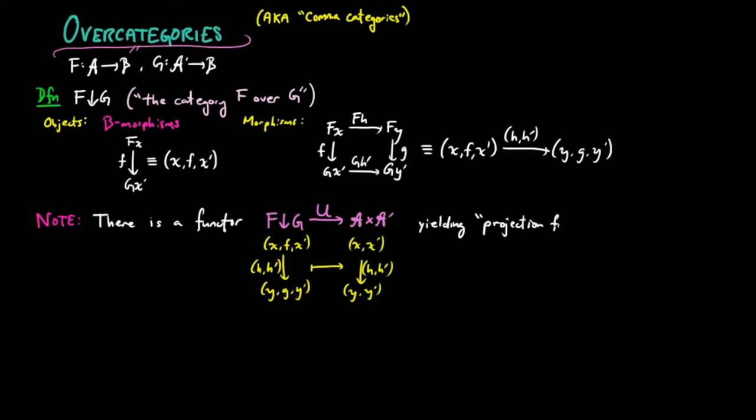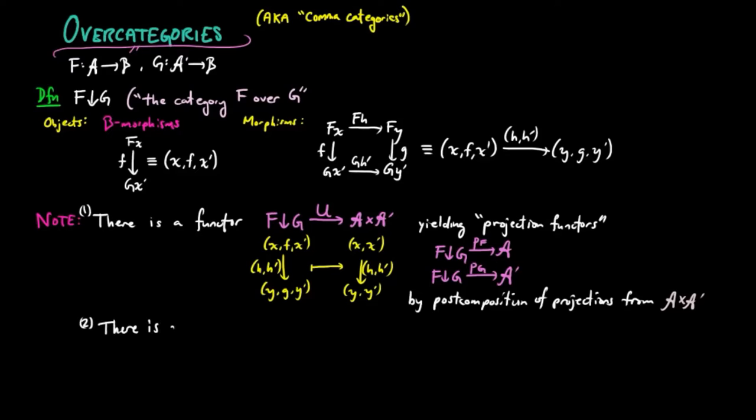And then this functor yields projection functors p lower script f from f over g to a, and p lower script g from f over g to a prime, by post composition of the projections from the product category a and a prime.